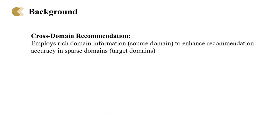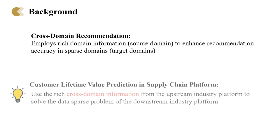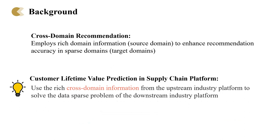Cross-domain recommendation is a technique that employs rich domain information from the source domain to enhance recommendation accuracy in sparse domains, the target domains. Inspired by this, we can apply cross-domain methods to customer lifetime value prediction in a supply chain platform, using rich cross-domain information from the upstream industry platform to solve the data sparsity problem of the downstream industry platform.